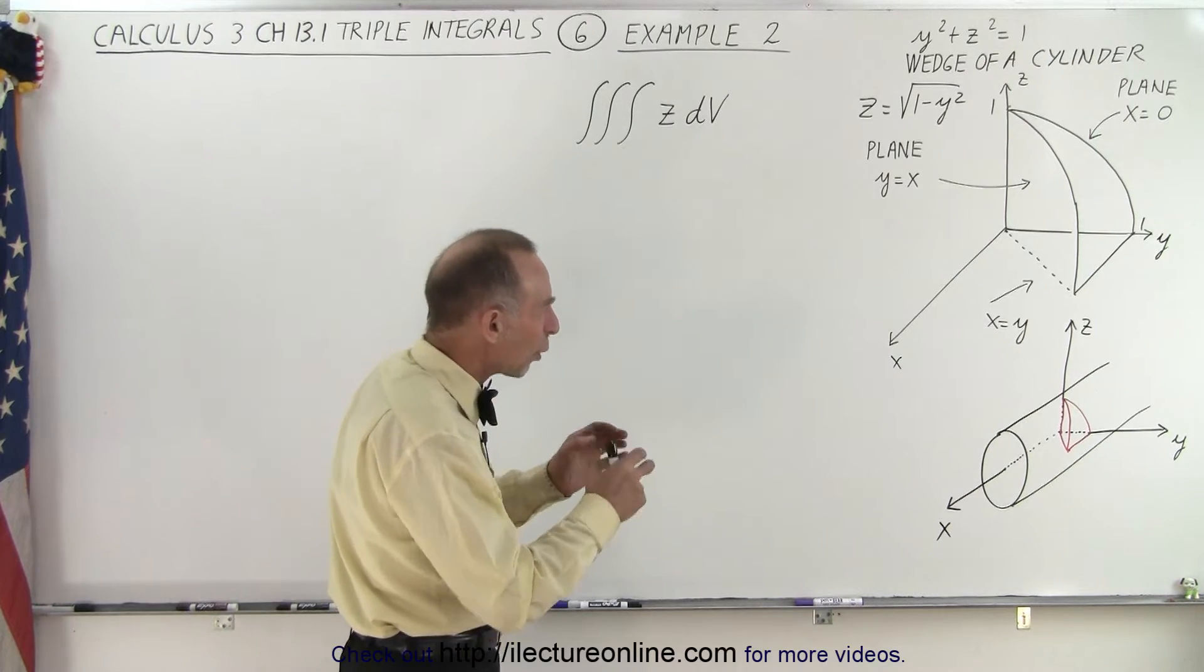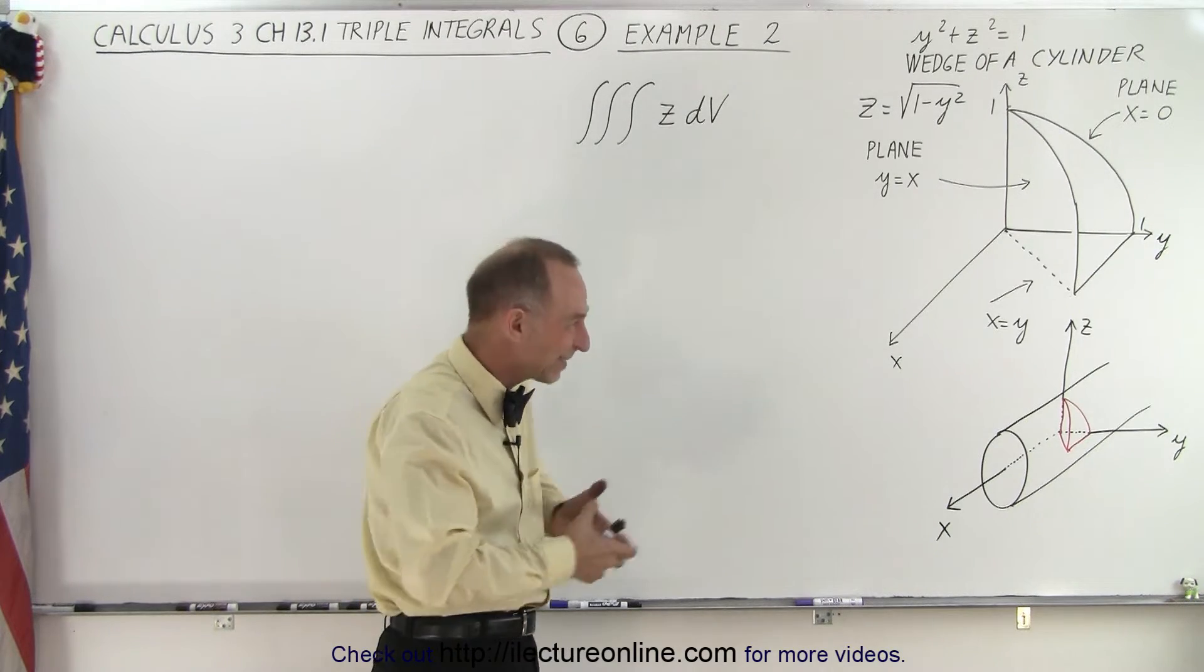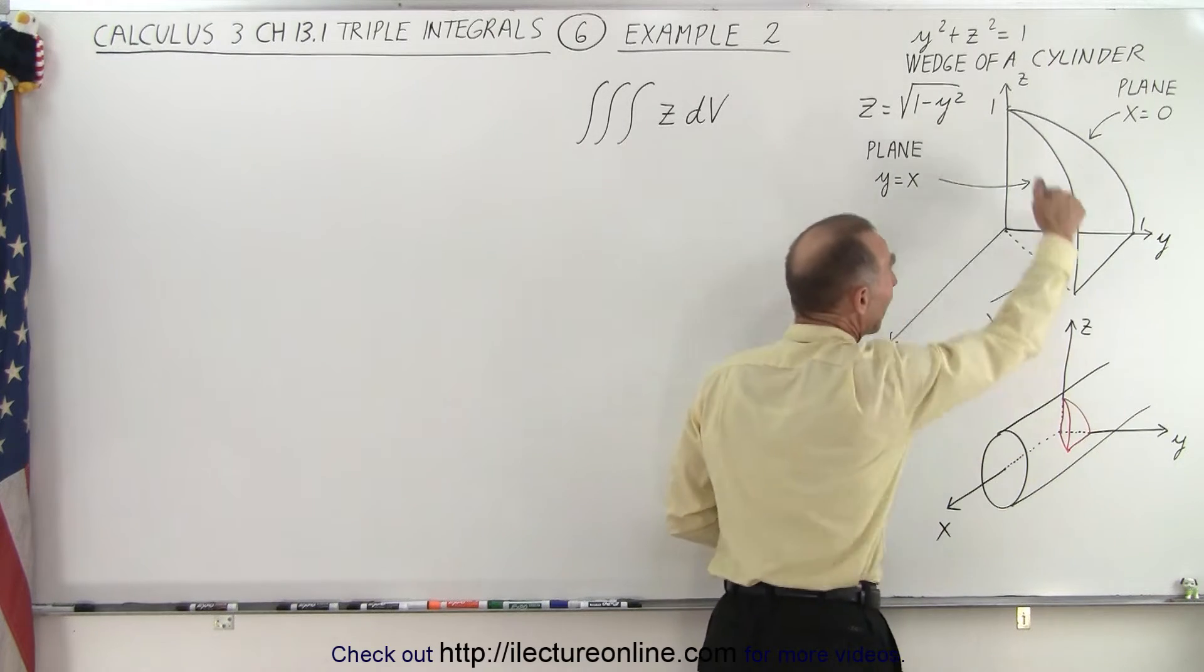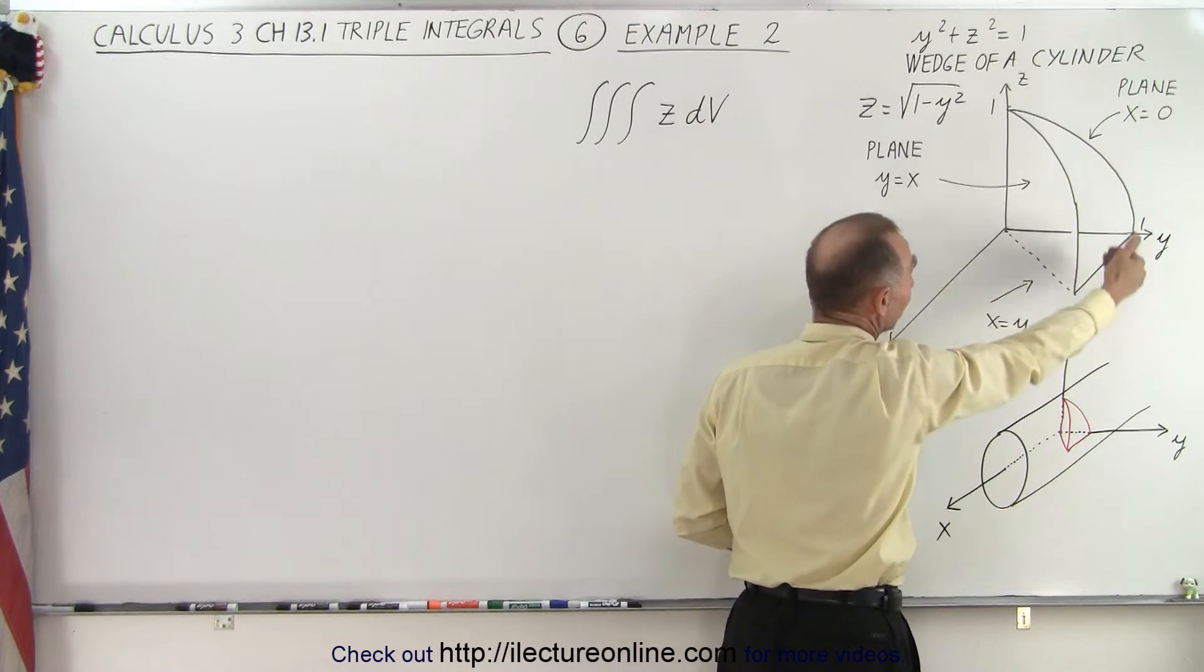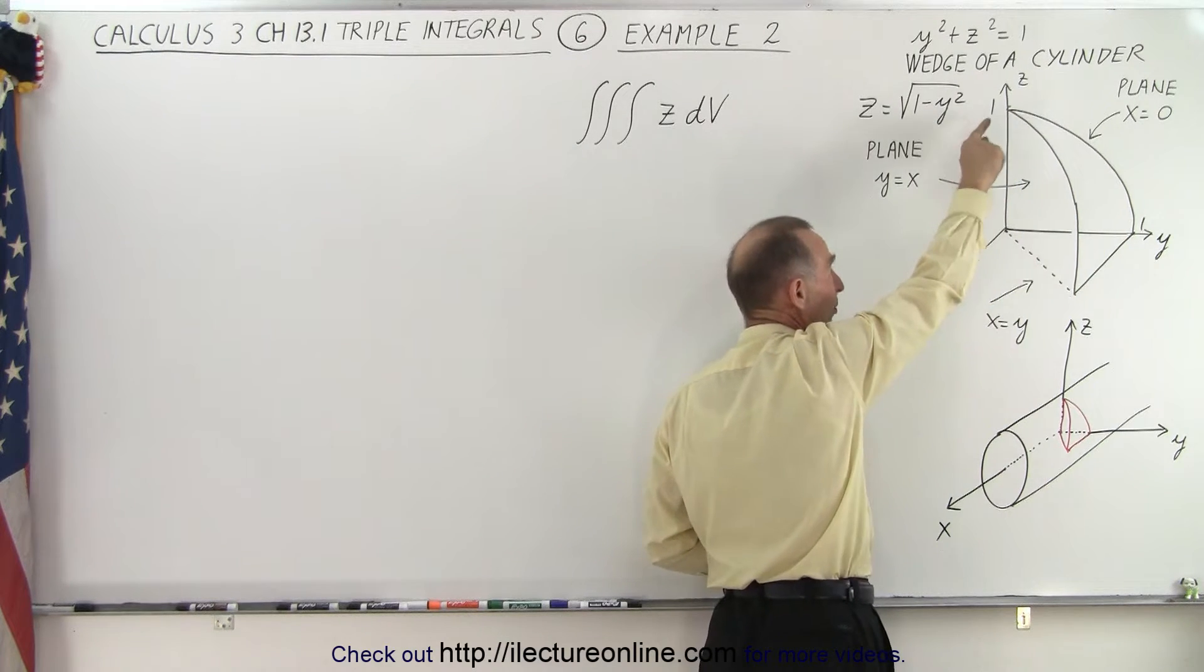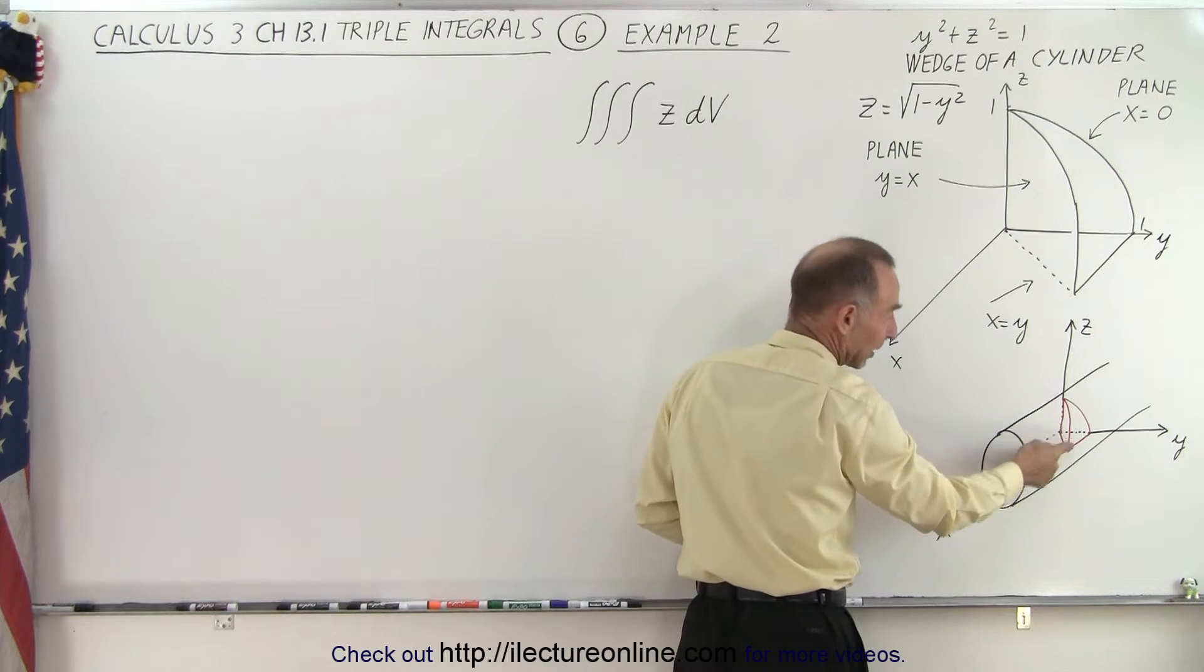So we're going to integrate over a section of a cylinder and it's kind of hard to see what it is. It's this little wedge type. Notice that the back of it is the x equals zero plane. This is the side of the wedge. It only goes one quarter from the top to the side like this.